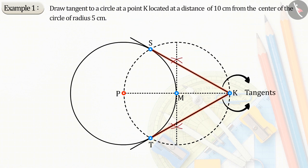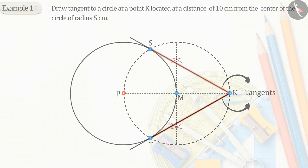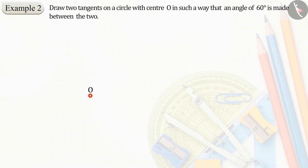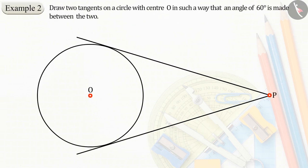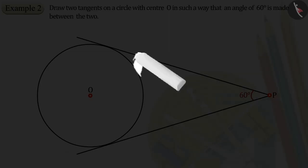Let us see another example based on the tangent lines of a circle. Draw two tangent lines on a circle with center O in such a way that an angle of 60 degrees is made between the two. Can you tell what is different in this question?